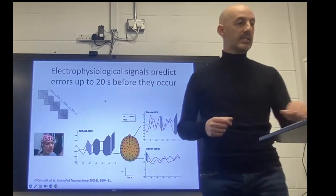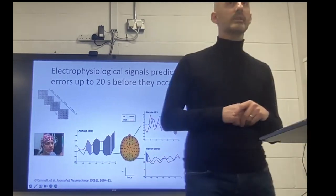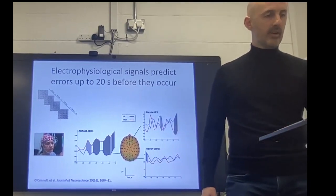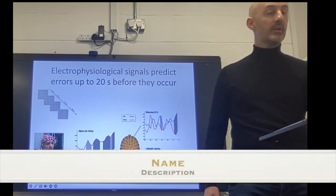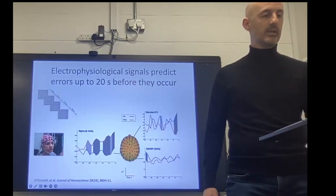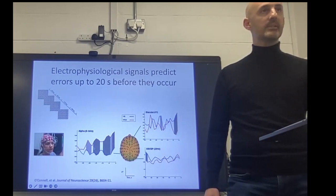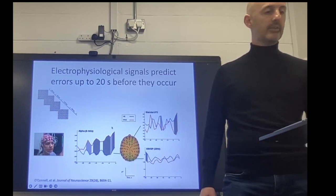First, the CTET — the continuous temporal expectancy task. We looked at neural signatures predicting performance on this task. Here you can see a period of up to 30 seconds prior to a target. We're looking at it in red prior to a lapse of attention or a miss, and in blue prior to a hit. The shaded areas are periods of statistical divergence. What we're seeing is a slow maladaptive increase in the alpha rhythm up to the point of a lapse.